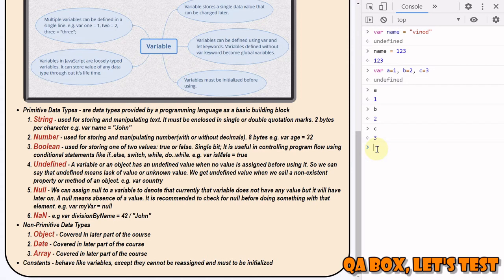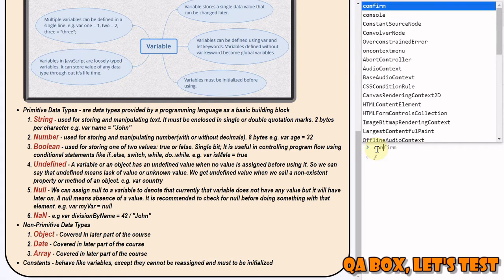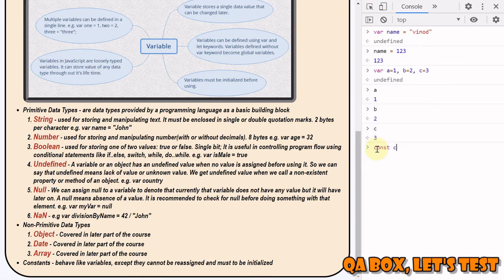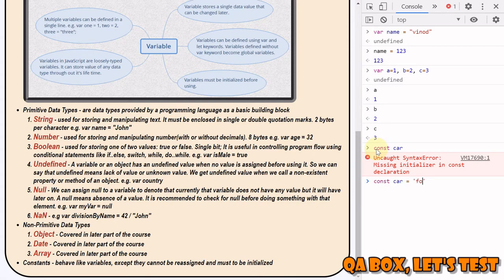Now, what are constants? Constants behave like variables except that they cannot be re-assigned and must be initialized. We use the 'const' keyword. For example, 'const car = Ford' - in variables we saw you can declare and initialize later, but with constants it is mandatory to provide the value immediately. Once set, if you try to change the value, it is not allowed - that's the major difference between a variable and a constant.